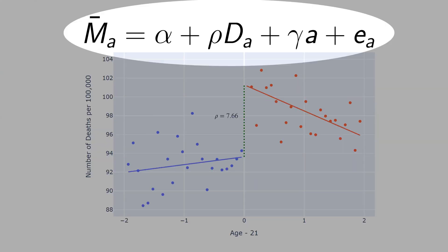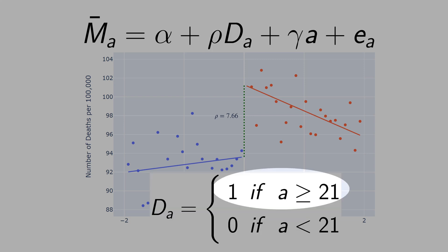We can get the rho based on this equation here. M̄ is the average mortality rate, and this is function of age, that's why this a here. Alpha is the intercept. Rho is the slope of the dummy variable D, that's function of age as well. D equals 1 if age is above 21, and equals 0 if age is below 21. Gamma is the slope of age, and you have the error term.